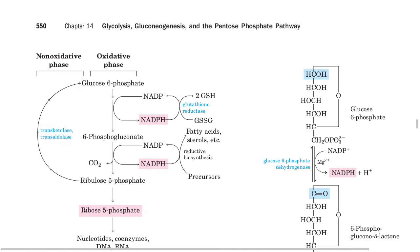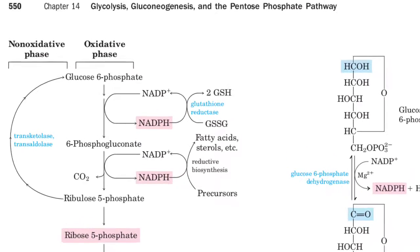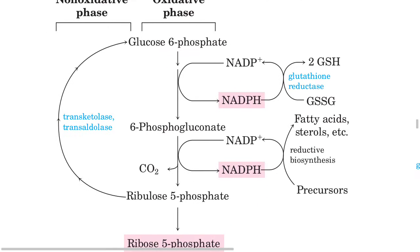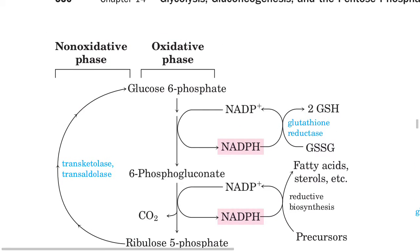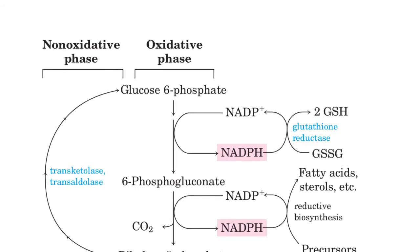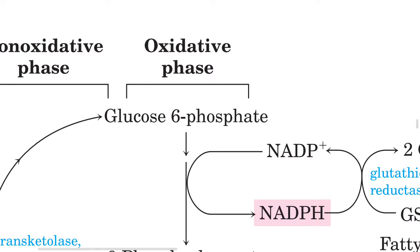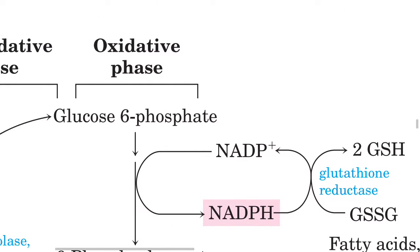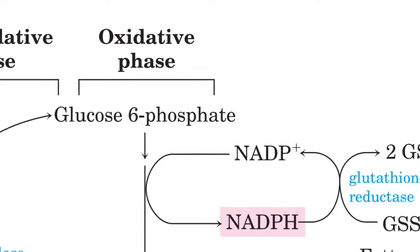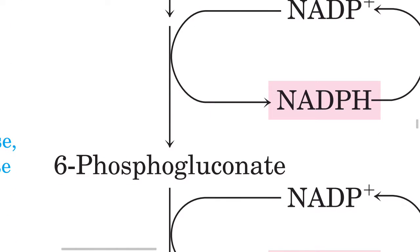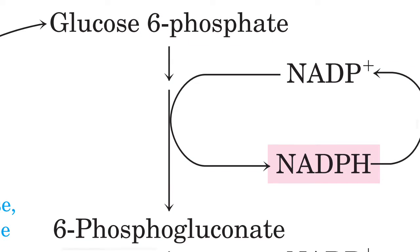The pentose phosphate pathway has two phases. The first is called the oxidative phase, and the second is called the non-oxidative phase. In the oxidative phase, glucose-6-phosphate is first converted into 6-phosphogluconate, during which NADP+ is converted to NADPH.